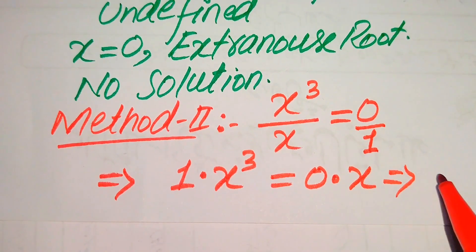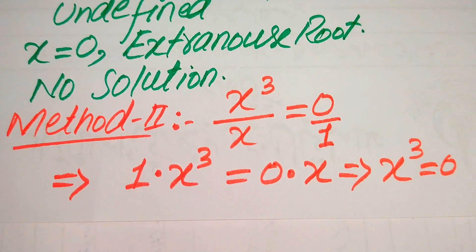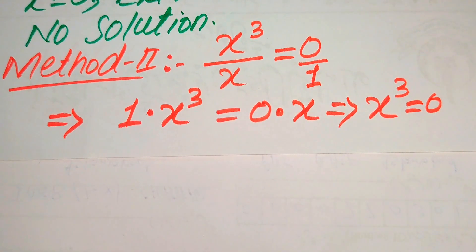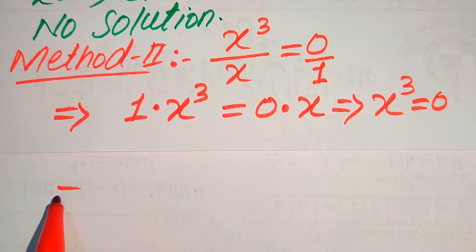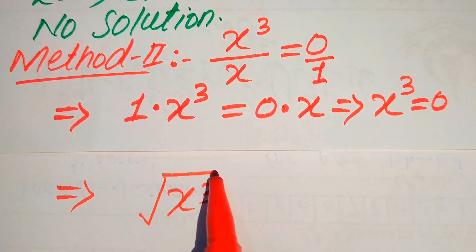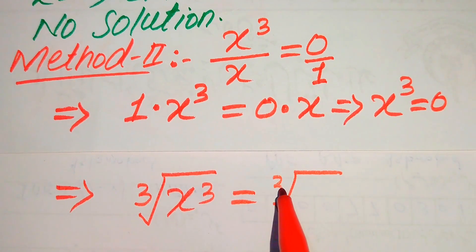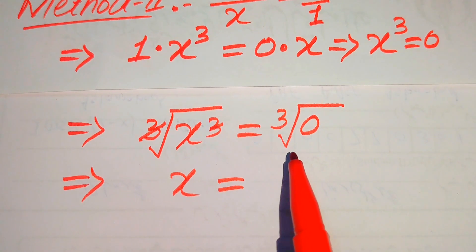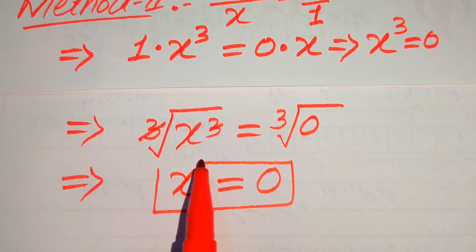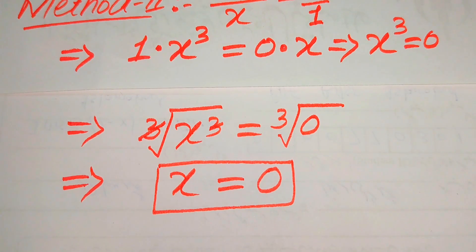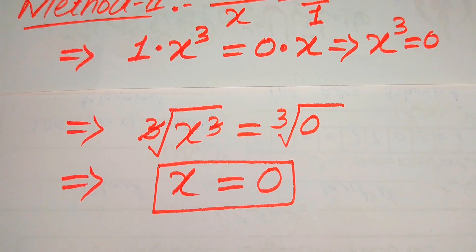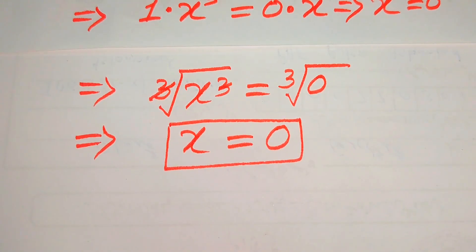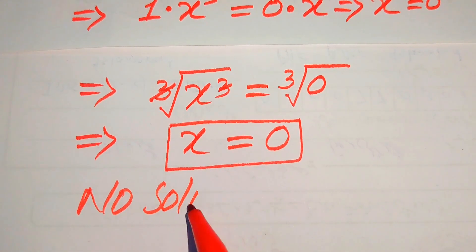We easily get x cubed equals 0. To find the value of x, we take the cube root on both sides. The cube root and the cube cancel, giving x equals the cube root of 0, which equals 0. So from the second method we also get x equals 0 as the only root. As verified in the first method, x equals 0 is an extraneous root and does not satisfy the equation, so our final conclusion is that this equation has no solution.